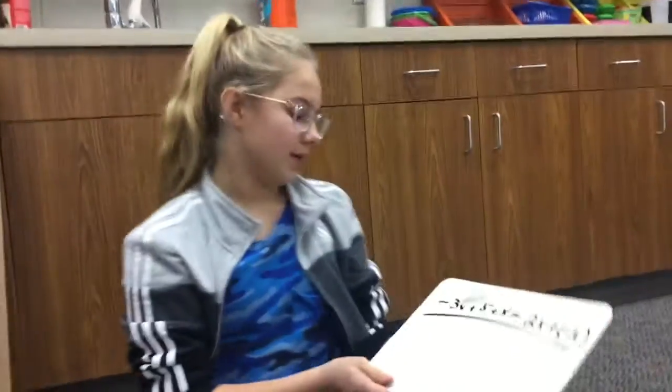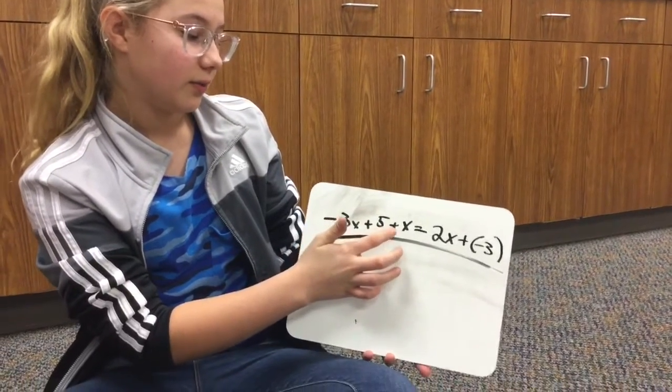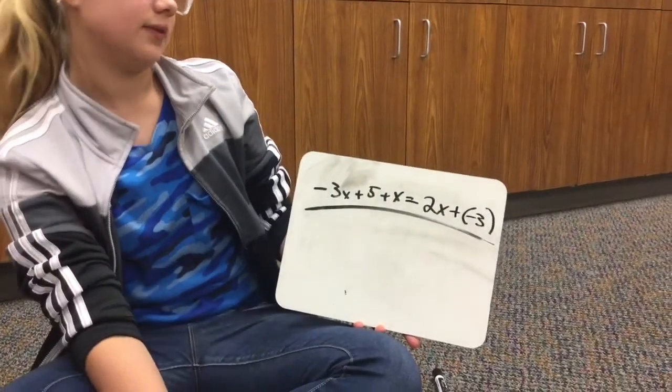Okay, so for the final question, we have negative 3, or the opposite of 3x, plus 5 plus x equals 2x plus negative 3. So down here we have it all set up.